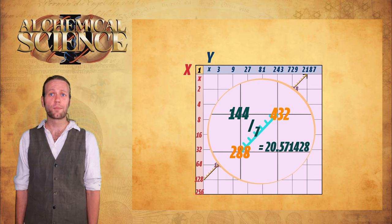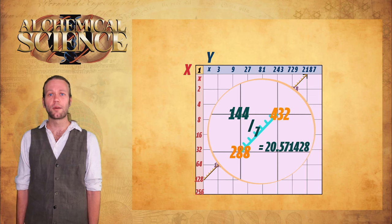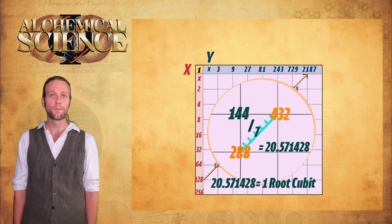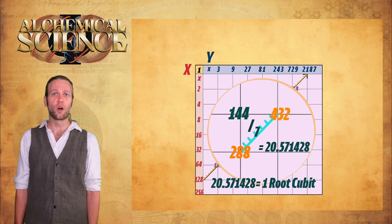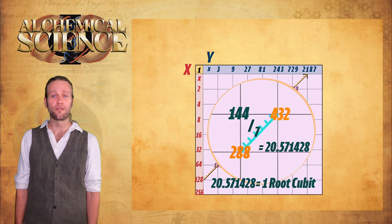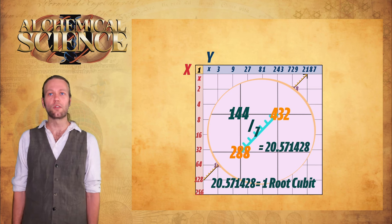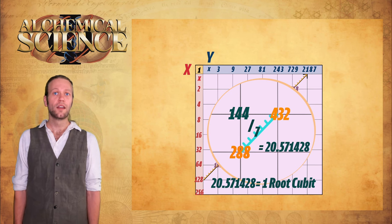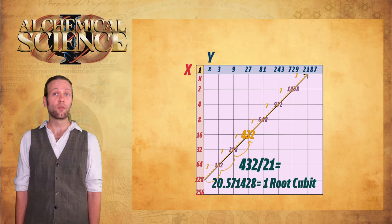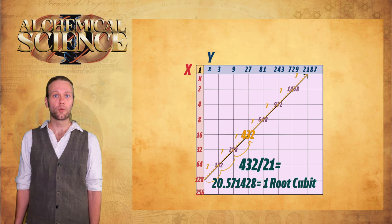144 divided by seven equals 20.571428. This number may not seem significant yet, but according to the currently accepted data from Petrie and others, 20.571428 is exactly the number of inches in the ancient Egyptian unit of measurement, the root cubit. So 20.571428 inches, 144 divided by seven equals one root cubit. We can also get there by dividing 432 by 21.